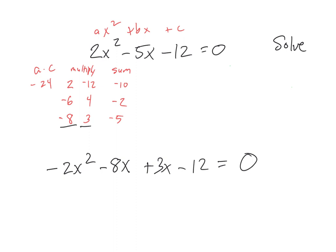In this case, I'm factoring by grouping first, and then I'll solve. There was no greatest common factor — that was always step 1. Step 2: if the first number is 1, I can look to factor right away, but the first number is 2. So I go 2 times negative 12, which is negative 24. Then I look for numbers that multiply to negative 24 that add to the middle term, which was negative 5.